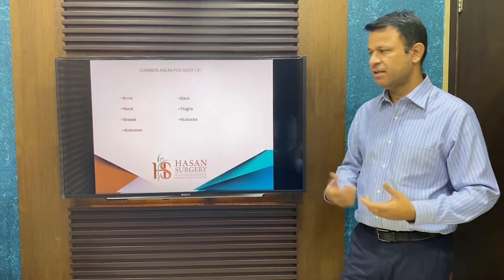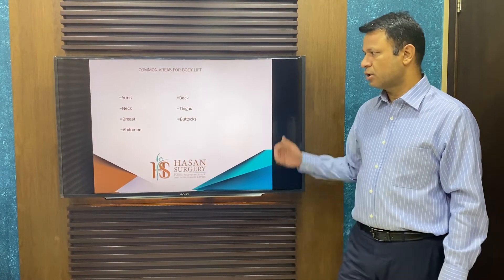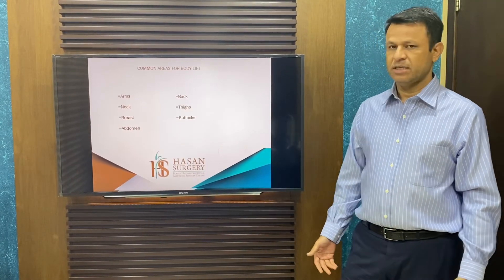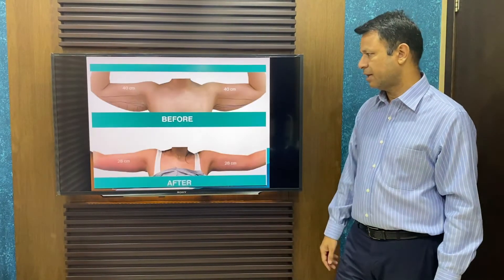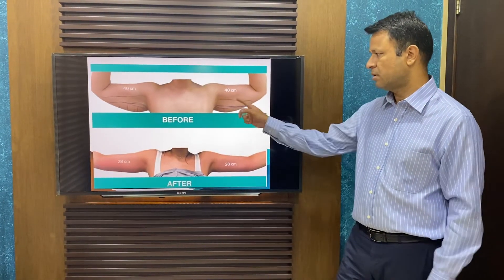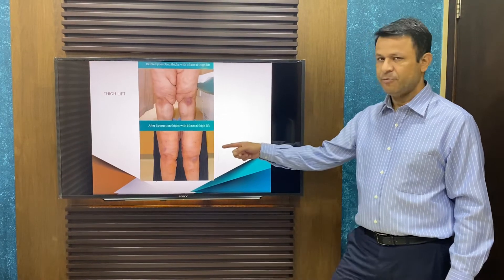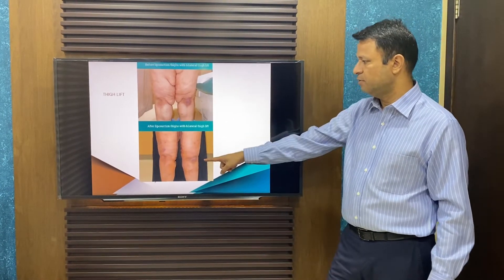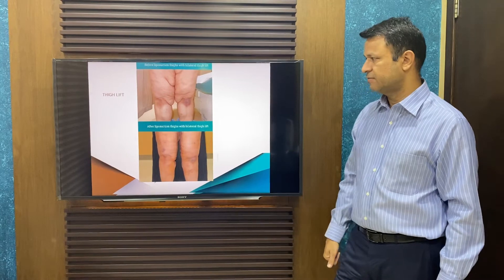They have excess skin that we can improve. The common areas are arms, neck, breasts, back, and thighs. For example, in this patient the arms were done — there is an arm lift. This patient had the thighs improved along with liposuction of the thighs and a thigh lift.